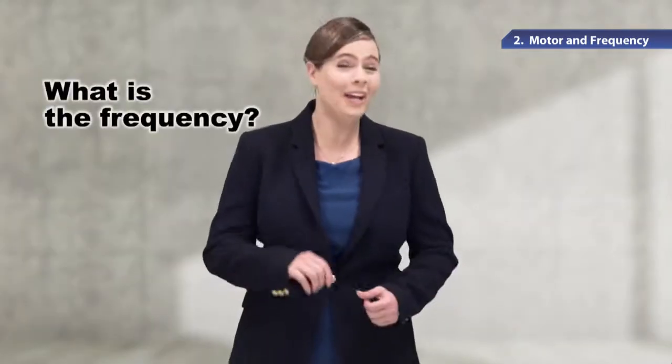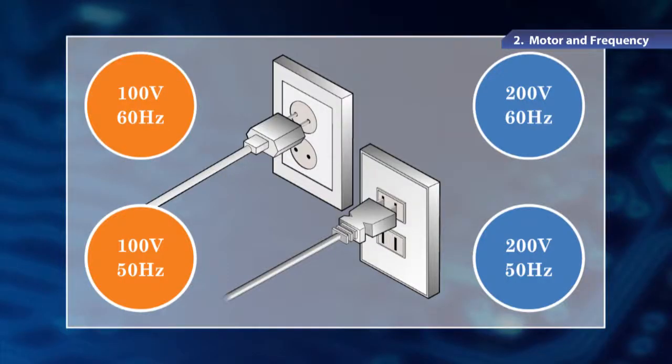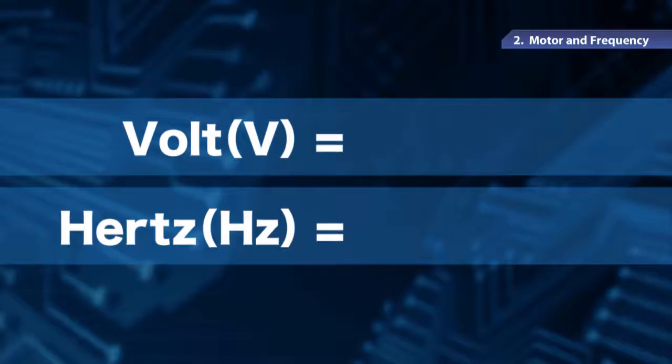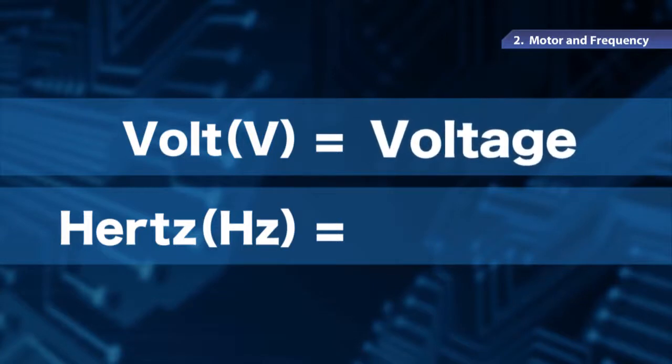Now, what is the frequency? Think about the electrical outlets in your home. Have you seen the specifications of outlets described such as 100 volts 50 hertz or 200 volts 60 hertz? Volts represents voltage and hertz represents frequency.